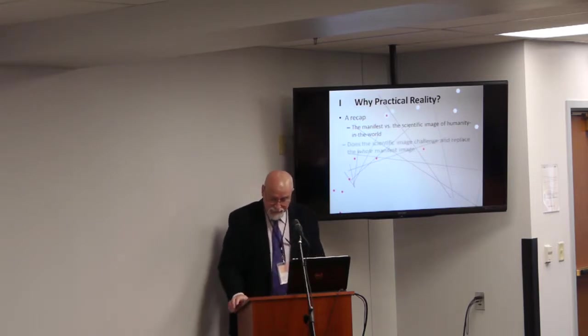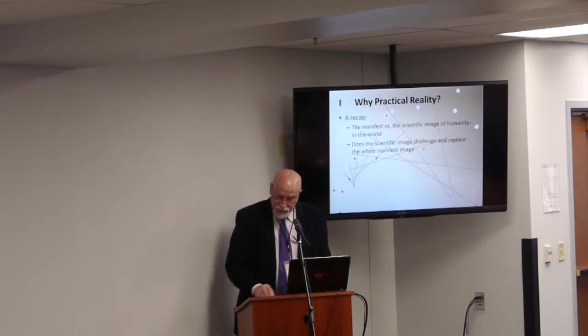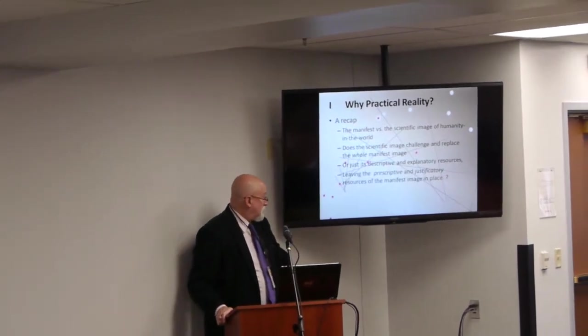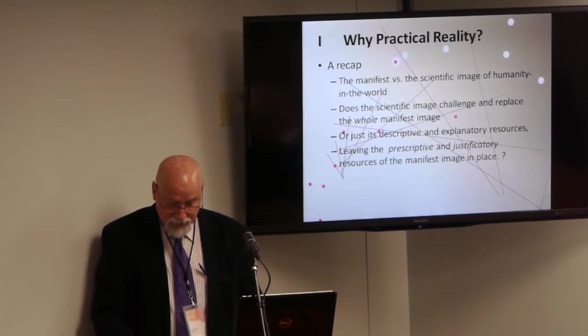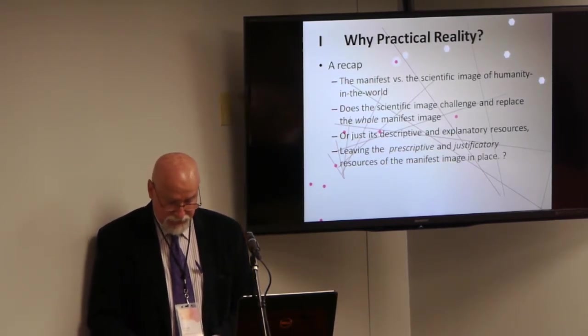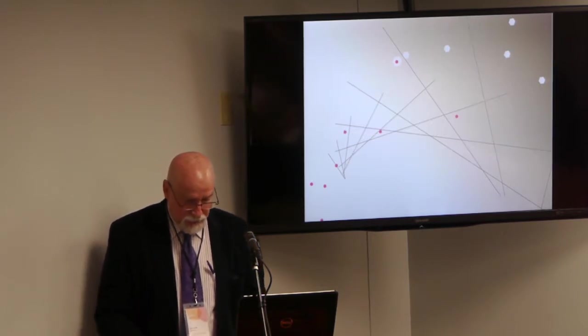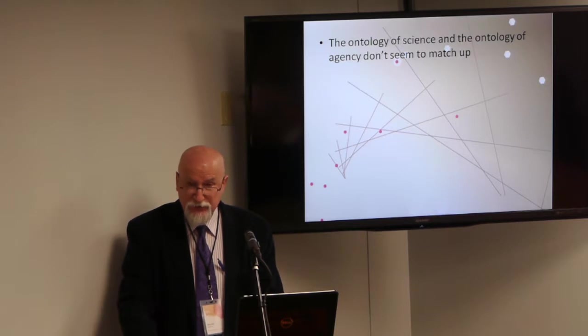But Sellars also thinks that as it matures and is fleshed out, it will come to challenge and eventually replace the manifest image. I have argued elsewhere that the description Sellars gives us of this replacement process in Philosophy and the Scientific Image of Man actually goes off track. It would be better to say that the descriptive and explanatory resources of the sciences will come to displace the descriptive and explanatory resources currently available in the manifest image, what Sellars calls the descriptive ontology of everyday life. This means that the prescriptive and justificatory resources of the manifest image will remain in place.